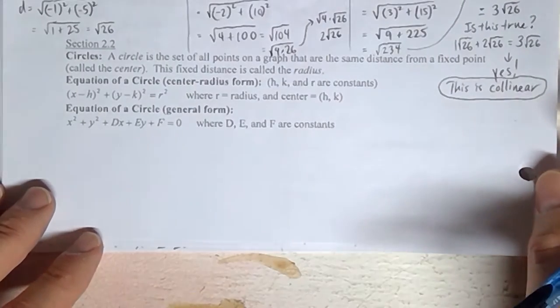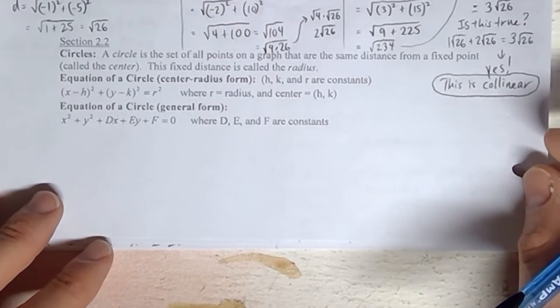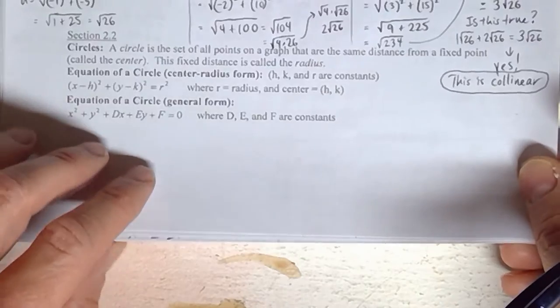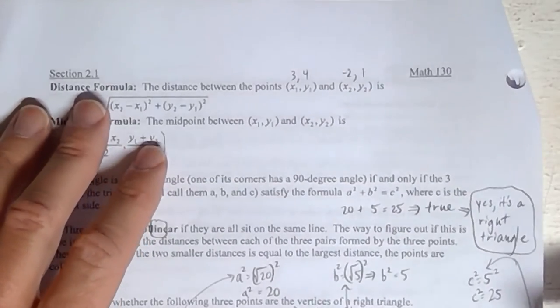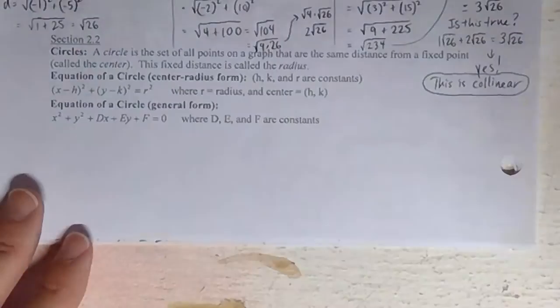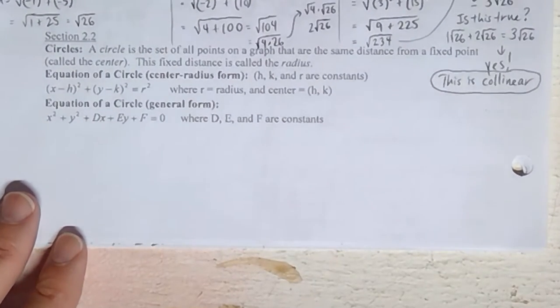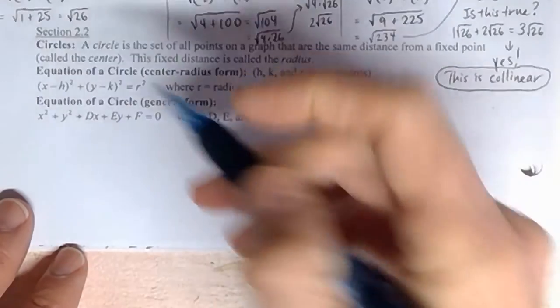Hello again, this is Mr. Wakefield and this time we're going to be looking at section 2.2. This is at the bottom of the page in your packet that says 2.1 at the top. We're going to go down to the bottom here and look at section 2.2. You can see that a main topic of discussion is circles.